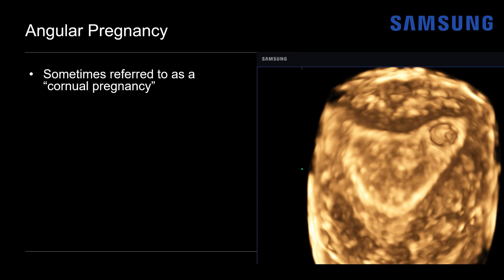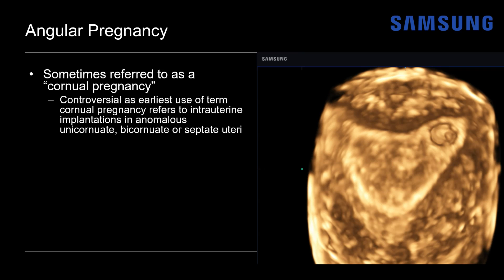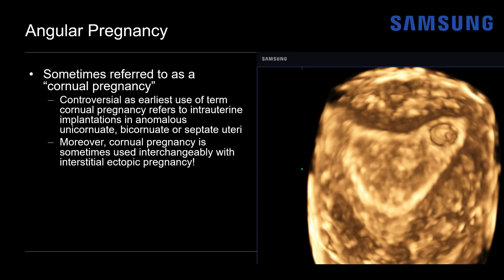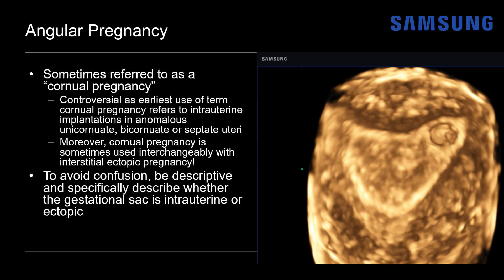There is some terminology that can be confusing here, as these are sometimes referred to as a cornual pregnancy. That's controversial though, as the earliest use of the term cornual pregnancy specifically refers to intrauterine implantations in the setting of anomalous uteri — like unicornuate, bicornuate, or septate uteri. To further muddle things, cornual pregnancy is sometimes used interchangeably with interstitial ectopic pregnancy. So depending on your practice, you may want to avoid the term cornual pregnancy due to this confusion and instead be descriptive — specifically describing whether the gestational sac is intrauterine or ectopic.